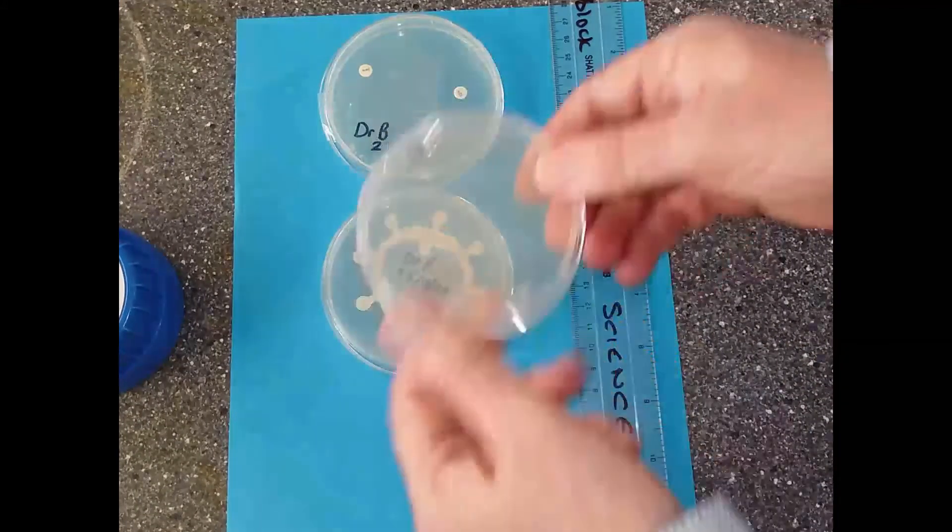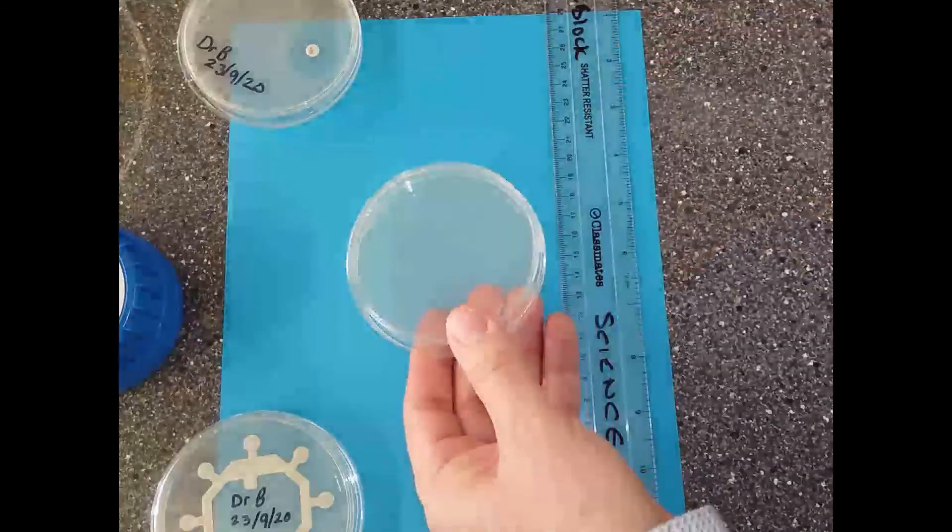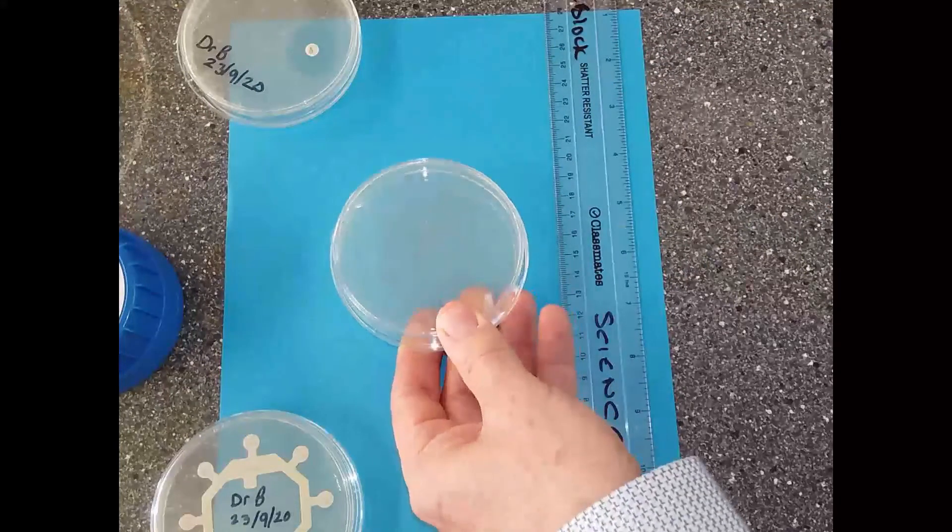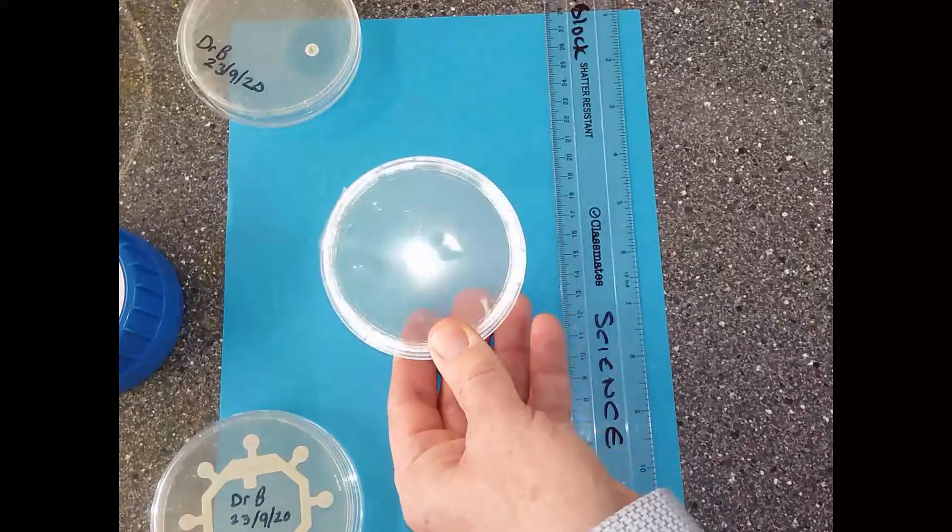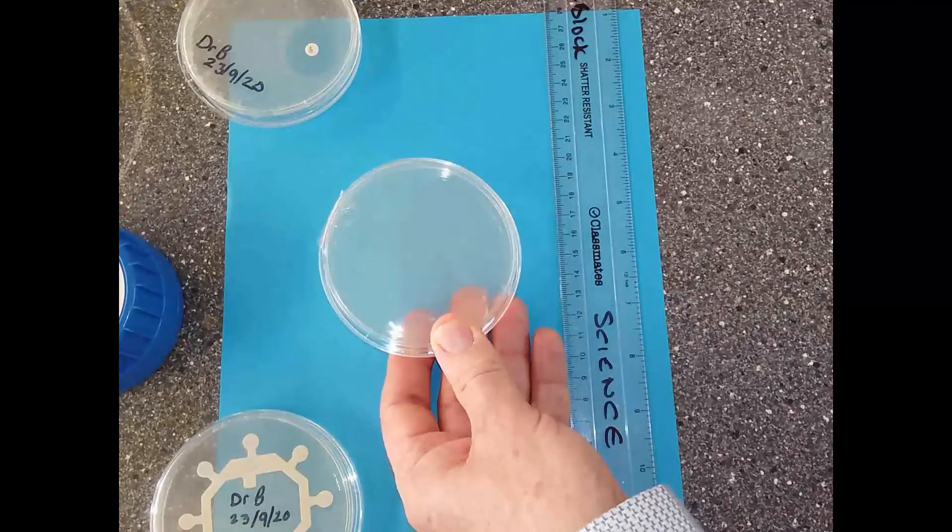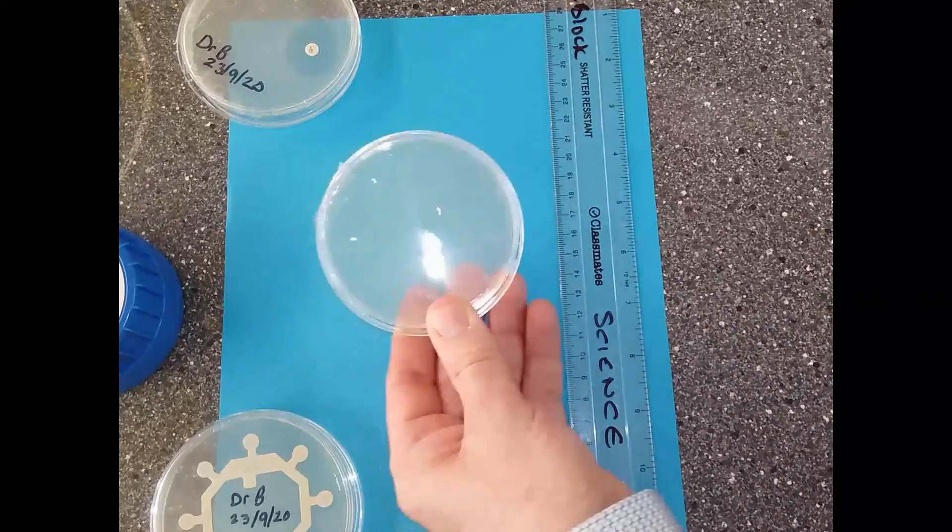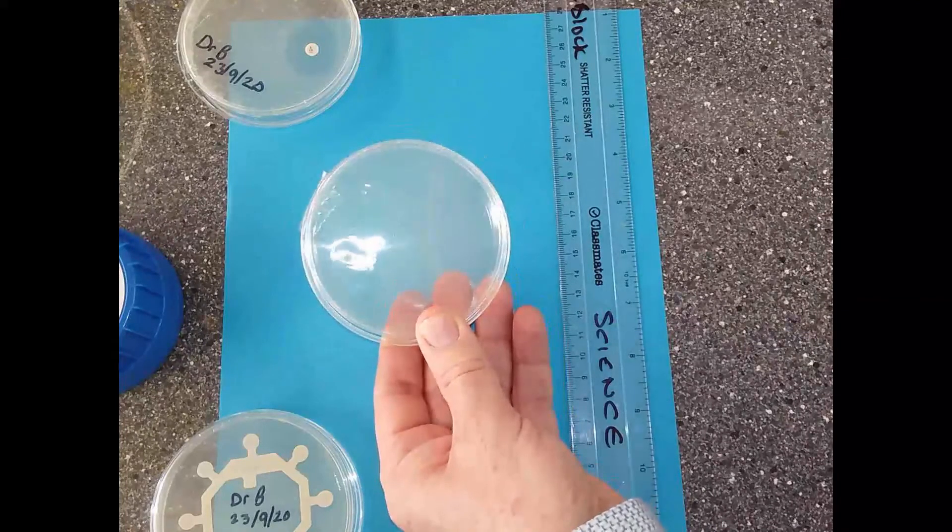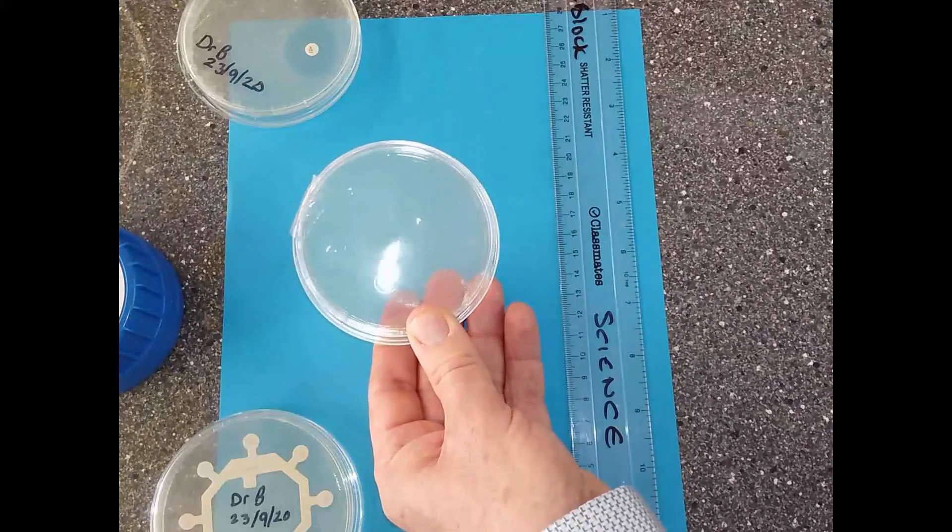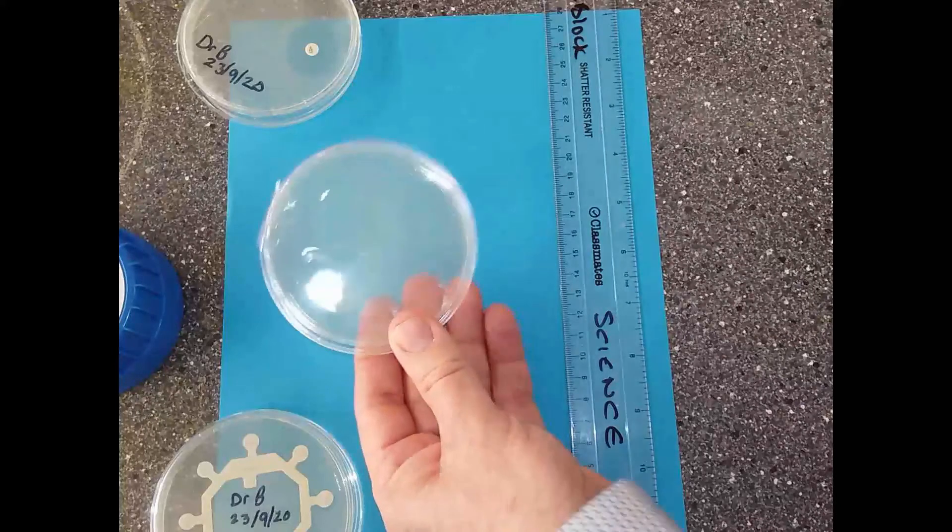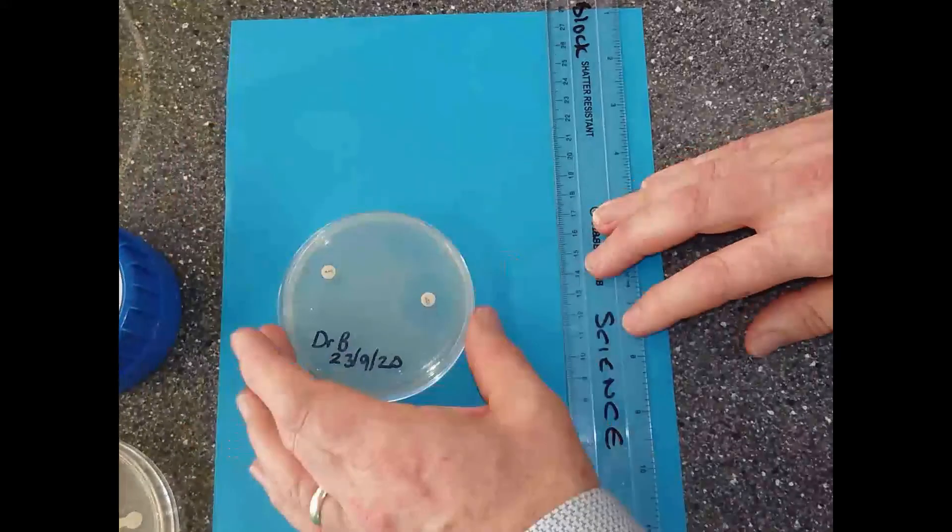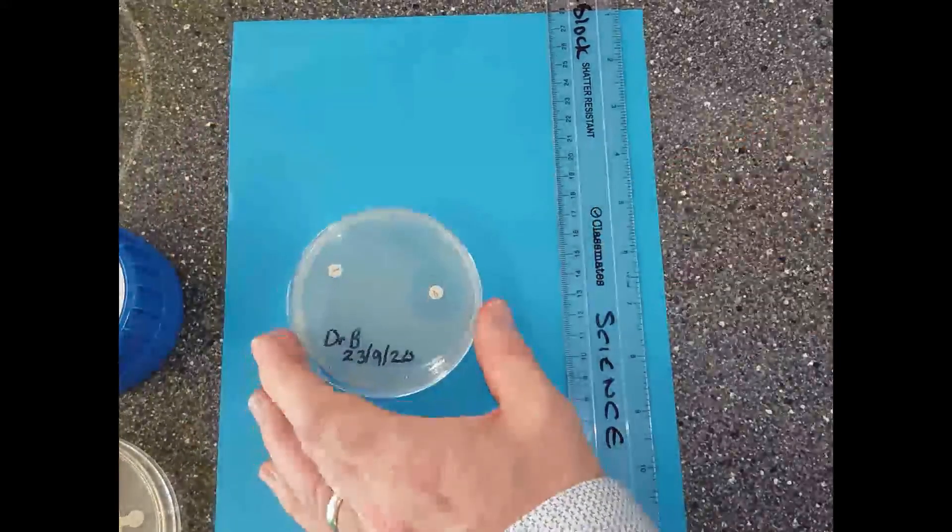I'm going to show you the first one - this one here was the one I spread the agar on yesterday. You can see pretty much it's uncontaminated, so there's no other cultures there. You can just see it's kind of a dark gray color. That's the E. coli that has been spread inside it. You can see there's no contamination whatsoever.